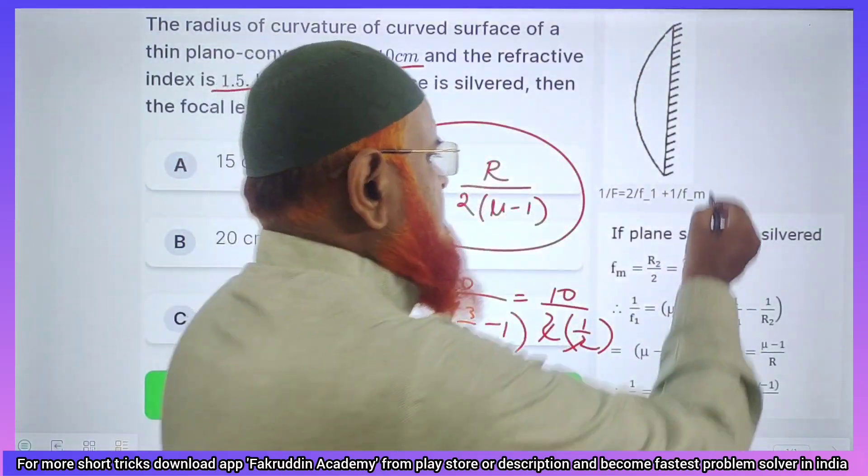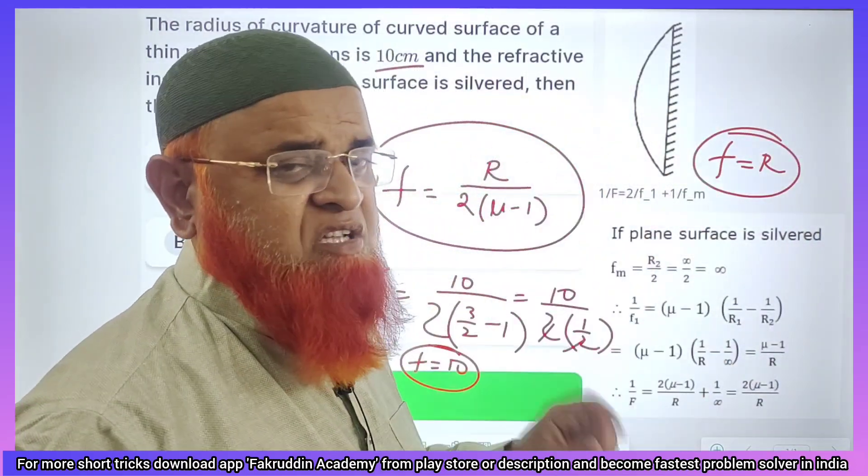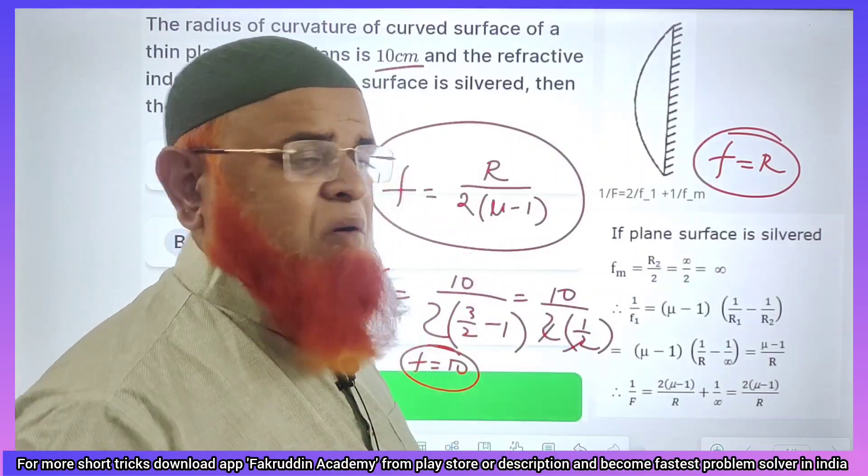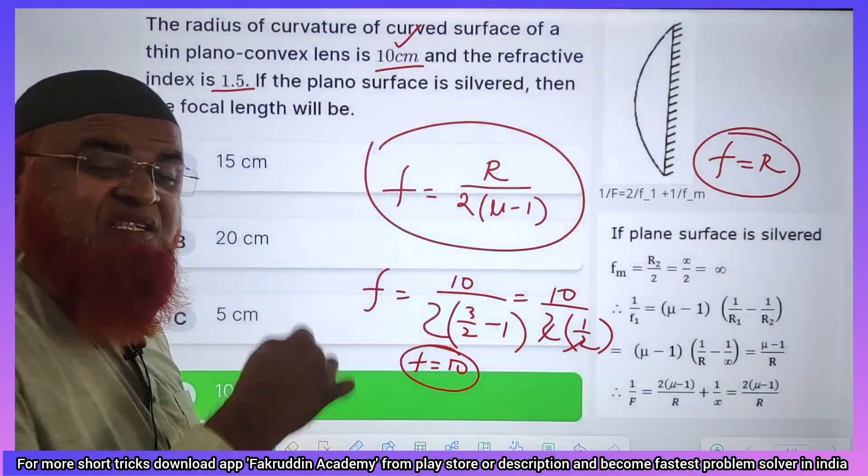If you want, whenever plano-convex lenses are silvered, directly focal length will become radius of curvature. You need not even solve the problem. That's it, see this is going to be your answer. Question is having this.